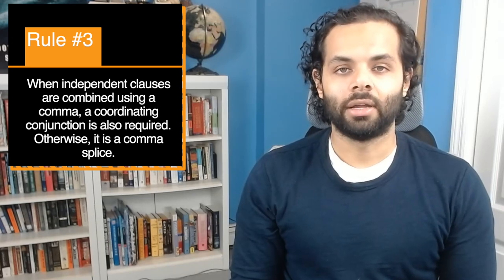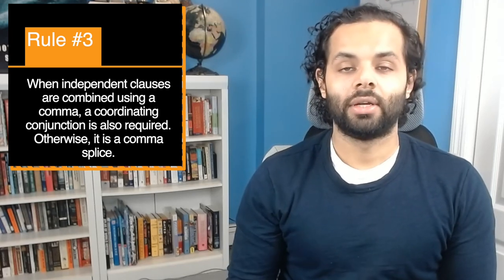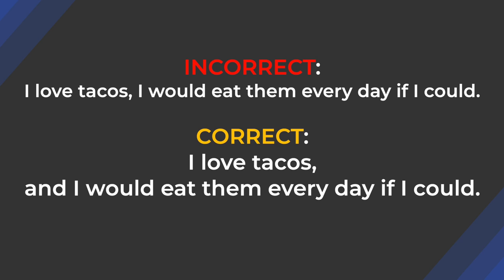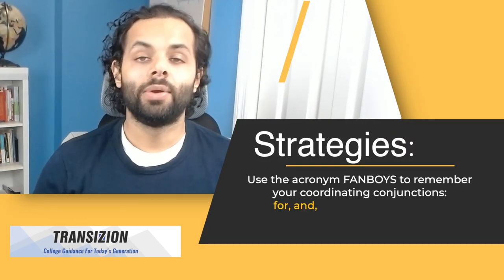Rule three: when independent clauses are combined using a comma, a coordinating conjunction is also required — otherwise it's a comma splice. A comma splice occurs when two independent clauses are connected with a comma and no coordinating conjunction. For example, 'I love tacos' is an independent clause; 'I would eat them every day if I could' is also an independent clause. To combine these with a comma, you must also use a coordinating conjunction like 'and.'